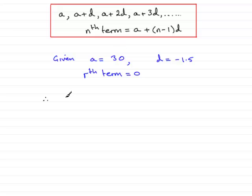plus (n minus 1), but n is r this time, so we have (r minus 1) times the common difference d, which is minus 1.5. This has got to come to zero.